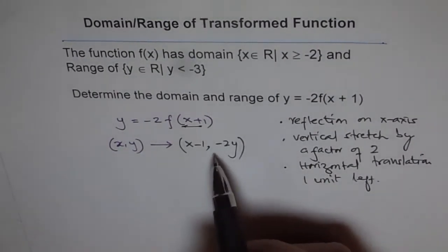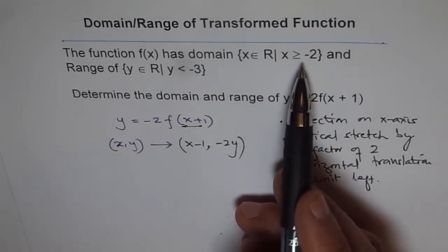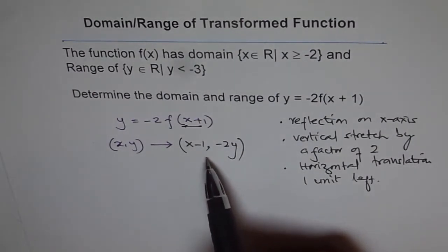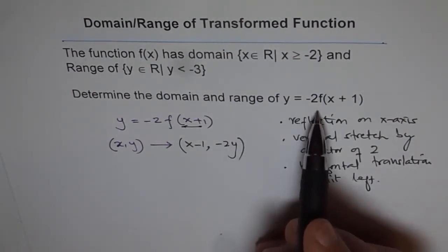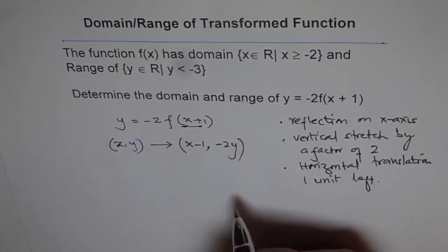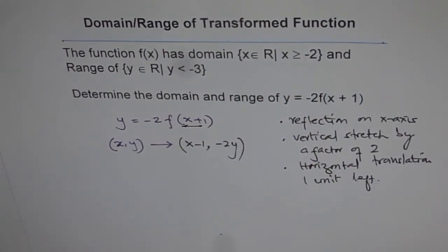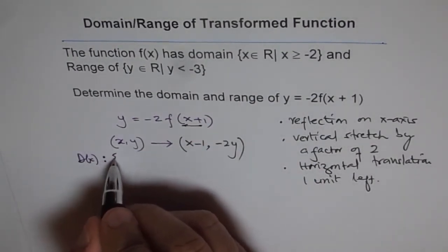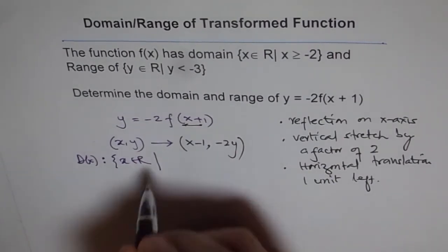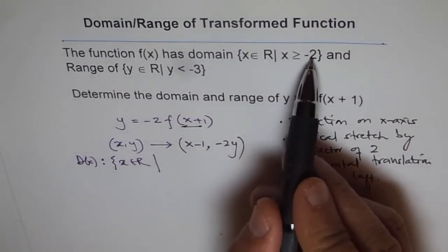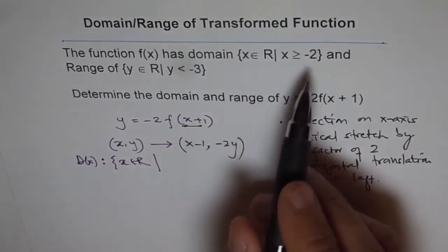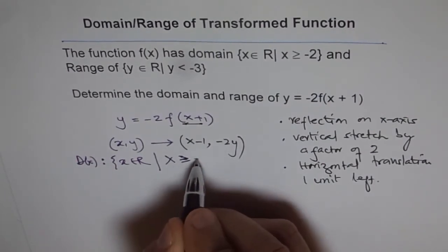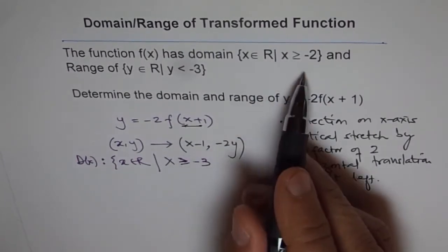These transformations also affect the points dictating the domain and range. The domain is x ∈ ℝ where x ≥ -2. The transformation is -1 on the x-coordinate, so the new domain becomes x ∈ ℝ where x ≥ -3.